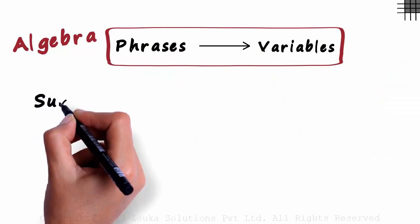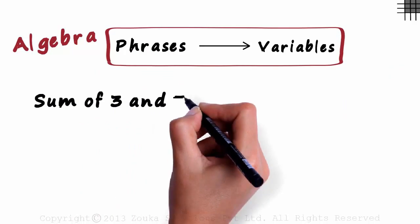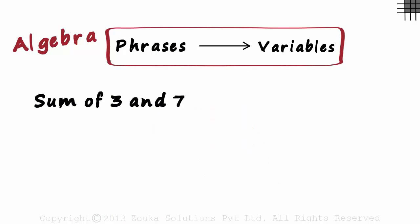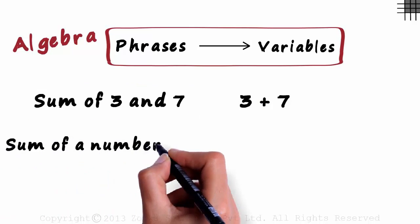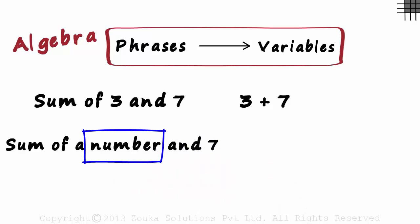How do we write the sum of 3 and 7 using numbers? We just write it as 3 plus 7. Let me modify the question a bit. How do we write the sum of a number and 7? Since this number is unknown, we use a variable in its place and write it as x plus 7.